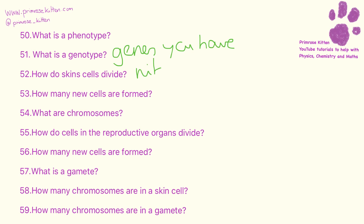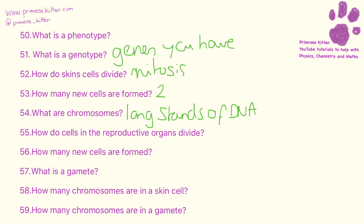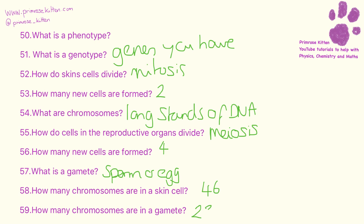Skin cells divide by mitosis, and it forms two new cells. Chromosomes are long strands of DNA. Cells in the reproductive organs divide by meiosis, and this will form four new cells. A gamete is a sperm or an egg cell. In skin cells you're going to find 46 chromosomes — that's 23 pairs — and in a gamete you're going to find just 23 chromosomes.